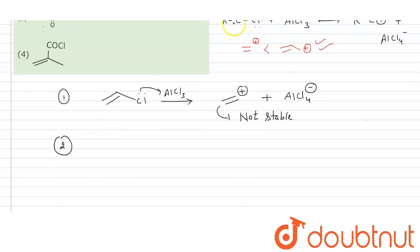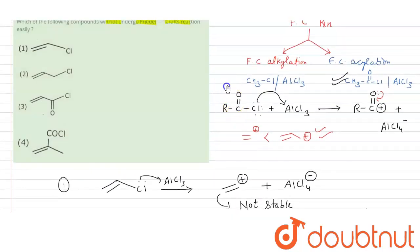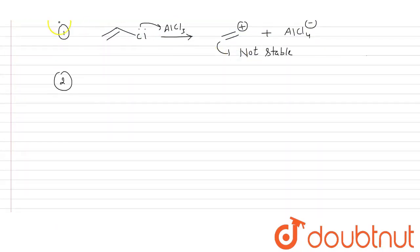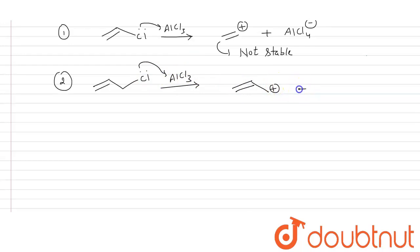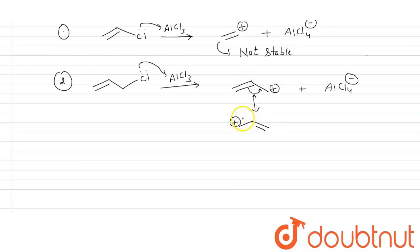Option B is allylic chloride. When allylic chloride reacts with AlCl3, a similar reaction takes place and there is formation of an allylic carbocation and AlCl4⁻. This allylic carbocation is resonance stabilized, as seen from its resonance structures. Because it is stable, allylic chloride will undergo the Friedel-Crafts reaction.